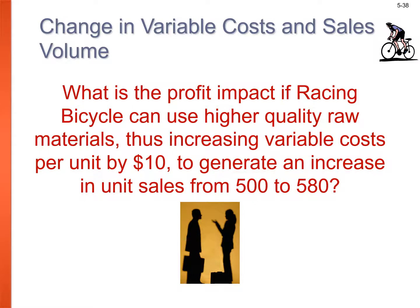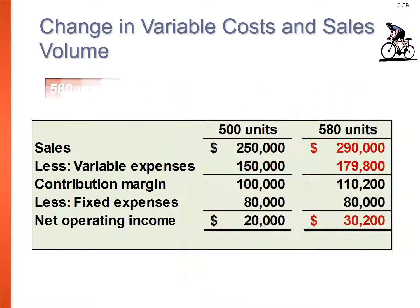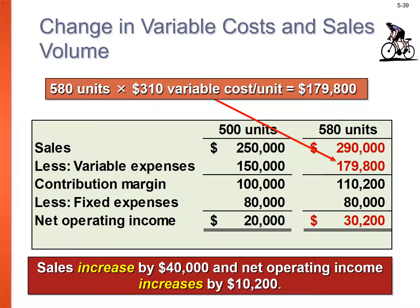What is the profit impact if Racing Bicycle uses higher quality raw materials, increasing variable cost per unit by $10, and increases unit sales from 500 to 580? At 580 units × $500 = $290,000 sales. New variable cost = $310/unit × 580 = $179,800. Contribution margin = $110,200. Fixed expenses remain $80,000. Net operating income = $30,200. Higher variable expenses lower contribution margin if sale price doesn't change.